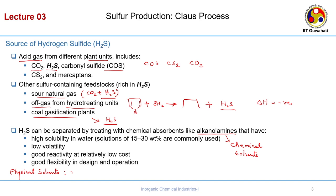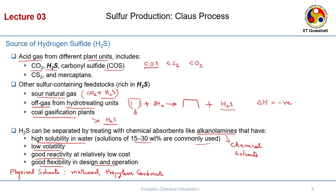For chemical solvents, they should have high solubility in water — solutions of 15 to 30 percent are commonly used. Carbonyl sulphide needs to be hydrolyzed in water in the presence of a catalyst. When you do hydrolysis, it gets converted back to hydrogen sulphide. The alkaline amine should be low volatile, have good reactivity at relatively low cost, and show good flexibility in design and operation.